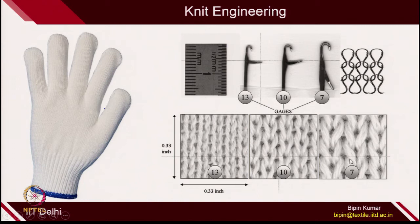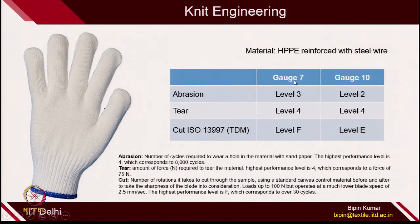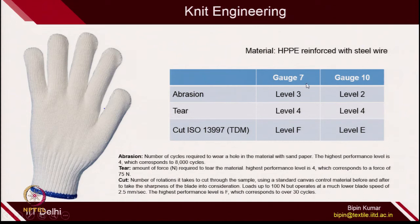For example, if you develop gloves on 7 gauge and 10 gauge, you can see how the properties can differ. A 7 gauge glove, where the loops are bigger, has better abrasion performance than 10 gauge; tear resistance remains the same, but cut resistance of 7 gauge is better than 10 gauge. This is how knit engineering is important in protection. If you are working in the gloves field, you can play with different gauge, different loop length, and different materials to check the performance.